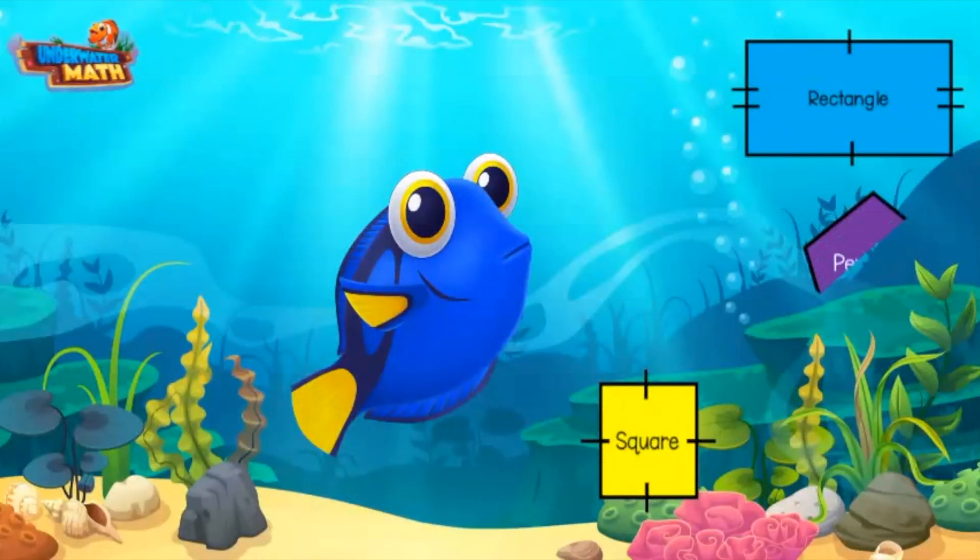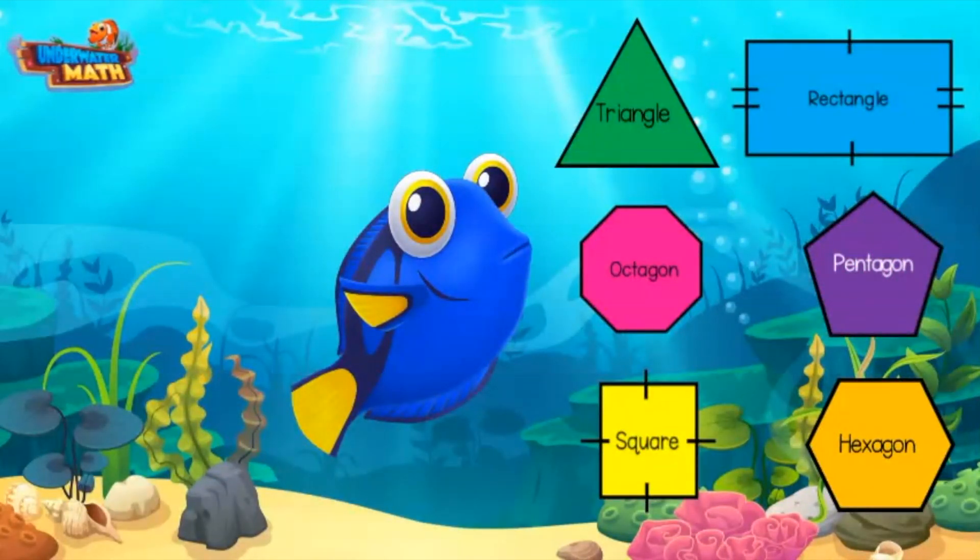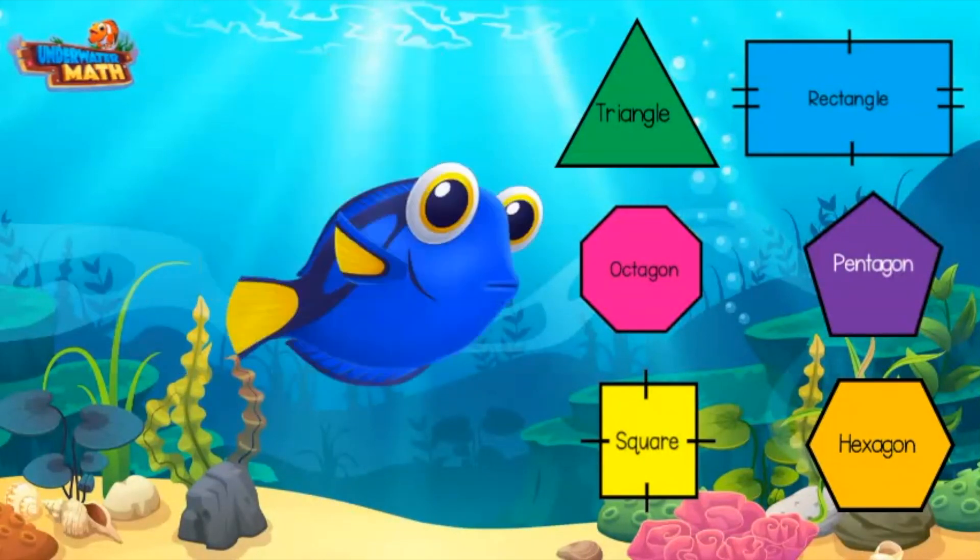Two-dimensional shapes have different attributes. These attributes include their sides, vertices, and parallel lines. Use this information when identifying two-dimensional shapes.